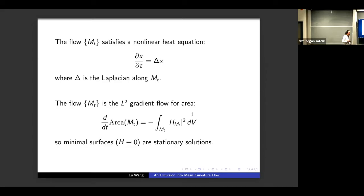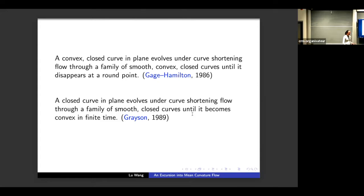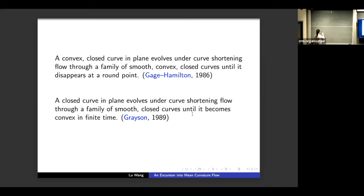Let's look at the one-dimensional case. Consider a convex closed simple curve in the plane. By a classical result of Gage–Hamilton, the curve will contract under the flow, remaining smooth and convex, and will eventually disappear at a round point. For instance, take a round circle of radius R. Each point on this circle has mean curvature pointing toward the center with magnitude 1/R. The circle shrinks under the flow while remaining circular, and as it shrinks, the smaller circle has larger mean curvature. In finite time, the radius shrinks to zero and the curvature blows up.